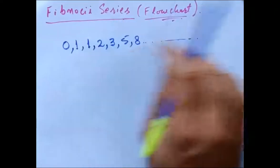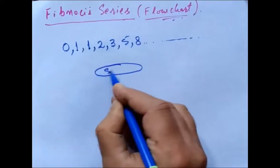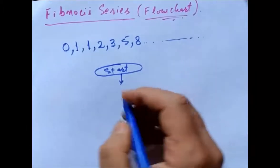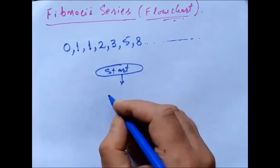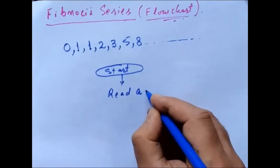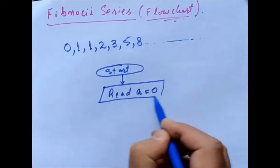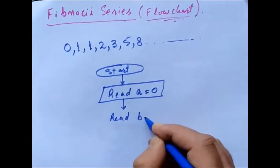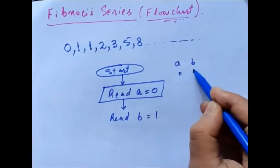We have to draw a flowchart to generate this series. I will write here: Start. Now I will take a variable — I will write: read a, but a will be initialized to 0, so read a equals 0. Then I will write: read b equals 1. So a will be 0 and b will be 1.